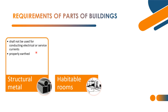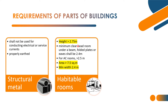Next part: habitable rooms. Minimum height 2.75 meters. Minimum clear headroom under a beam or folded plates shall be 2.4 meters. For air-conditioned rooms, 2.5 meters — then only air circulation will happen. Area of habitable room: minimum 7.5 square meters. Minimum width of habitable room: 2.4 meters. Habitable rooms are living spaces.